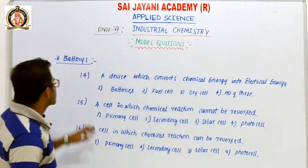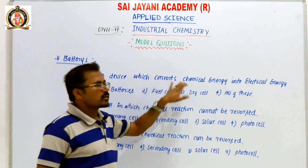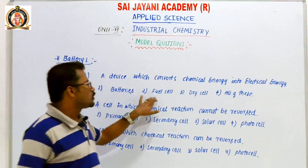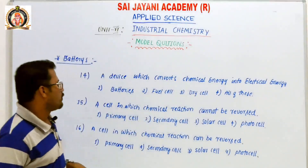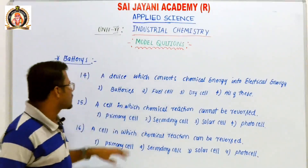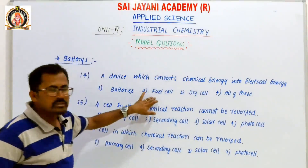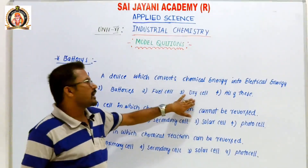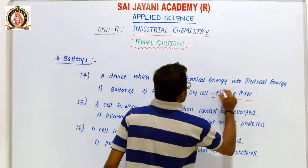Question 14: A device which converts chemical energy into electrical energy. Option 1 — batteries. Option 2 — fuel cell. Option 3 — dry cell. Option 4 — all of the above. Batteries, fuel cells, and dry cells all convert chemical energy into electrical energy. So option 4, all of the above, is the correct answer.